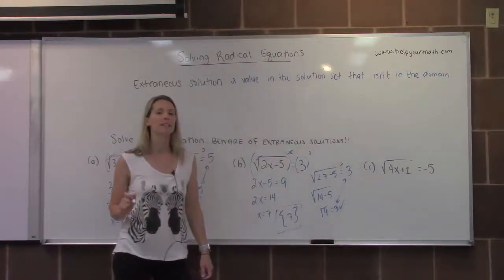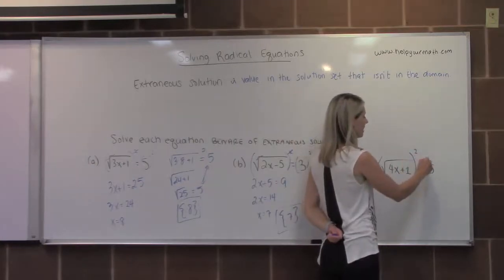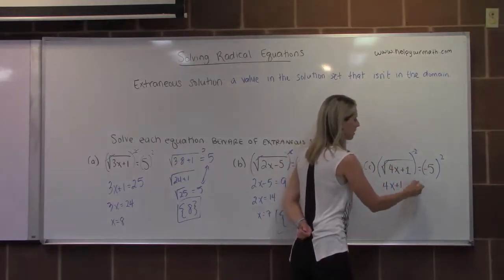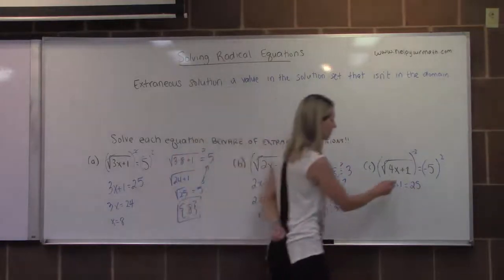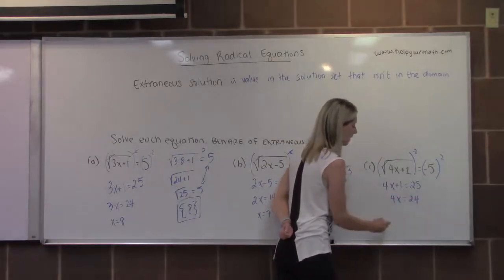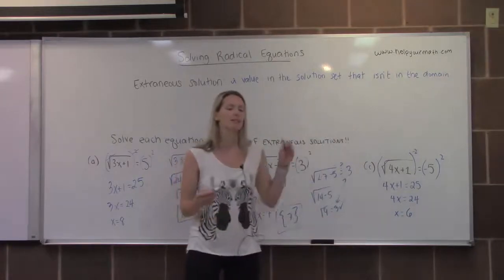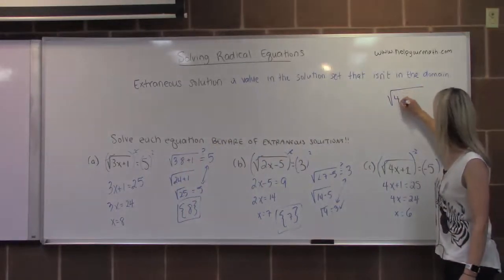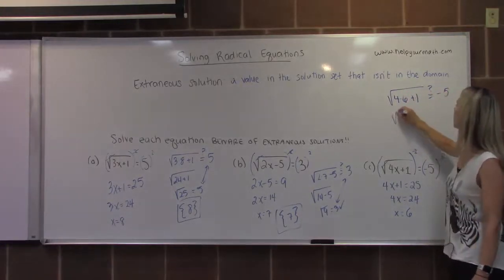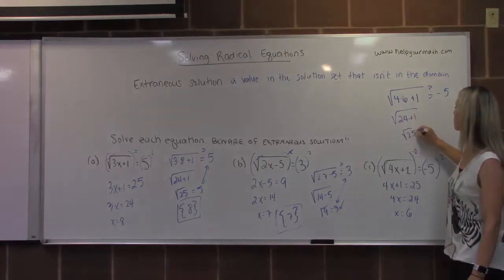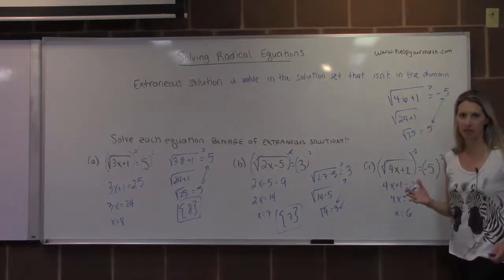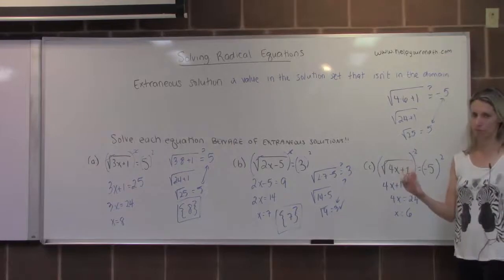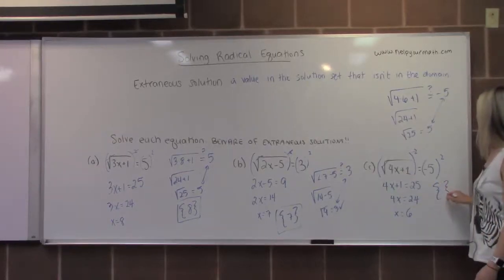In letter C, we have the square root of 4x plus 1 equal to negative 5. Squaring both sides gives 4x plus 1 equals 25. Subtracting 1: 4x equals 24, so x equals 6. But plugging in: the square root of 4 times 6 plus 1 is the square root of 25, which is 5 — not negative 5. So our only potential solution fails. This problem has no solution, which you can write as 'no solution' or with empty braces.